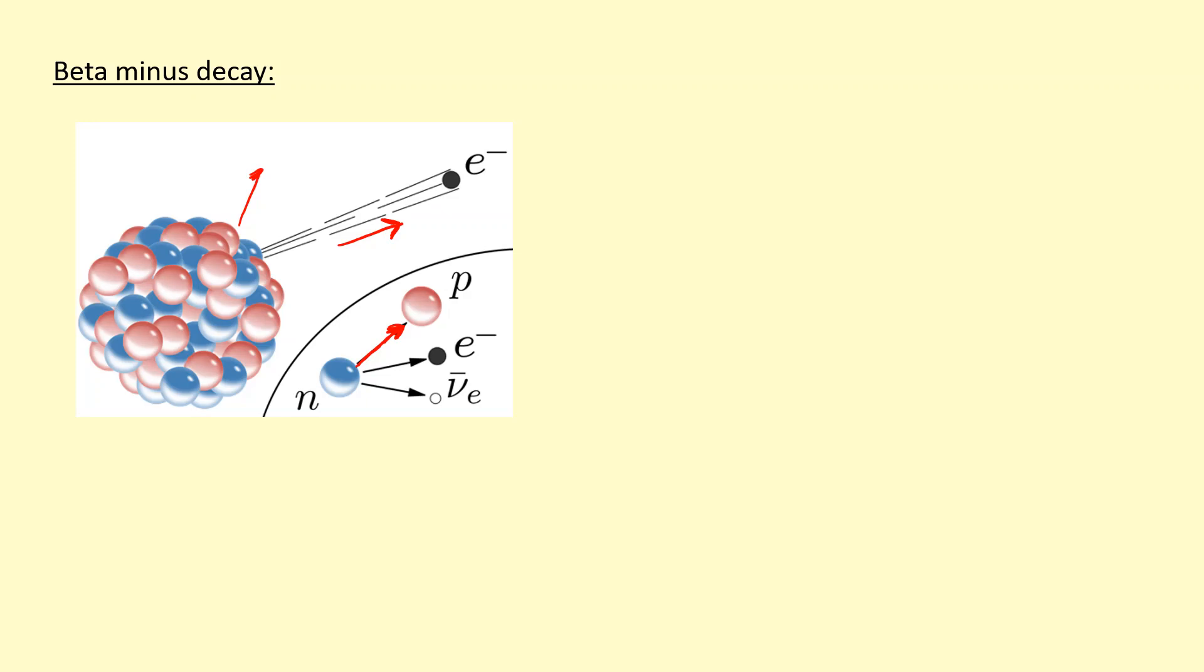You can use either of these symbols. The mass is very small, so we give it a mass number of zero. Because the charge is negative, we have minus one. Here's an example of a beta decay: potassium decaying into calcium.